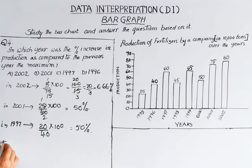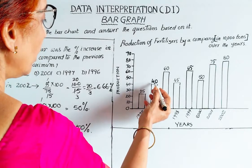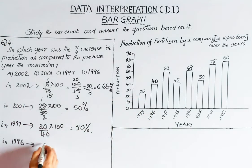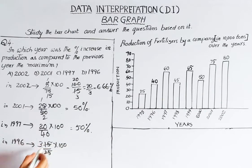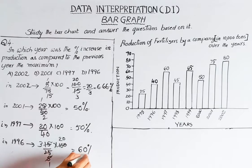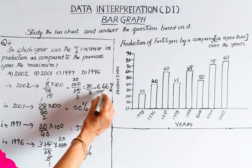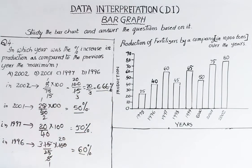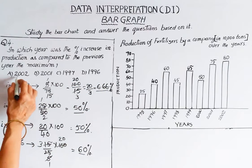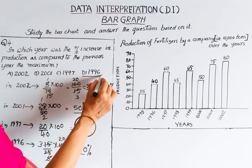Checking 1996: value is 40, previous year (1995) is 25. Difference is 15. 15 divided by 25 into 100. Simplifying: 3 times 20 equals 60%. So the percentage increases are approximately 6.67%, 50%, 50%, and 60%. The maximum is 60%, which is in 1996. The answer is 1996.